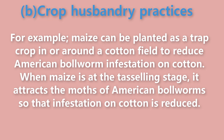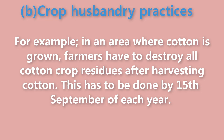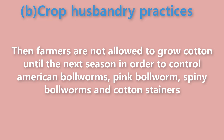For example, maize can be planted as a trap crop in or around a cotton field to reduce American bollworm infestation on cotton. When maize is at the tasseling stage, it attracts the moths of American bollworms so that infestation on cotton is reduced. Observing a closed or dead season: A closed season or dead season is a period during which a particular kind of crop is not grown at all in a certain area. During such a period, all crops of that particular type are uprooted and burned. For example, in an area where cotton is grown, farmers have to destroy all cotton crop residues after harvesting by 15th September of each year, then are not allowed to grow cotton until the next season, in order to control American bollworms, pink bollworms, spiny bollworms and cotton stainers.